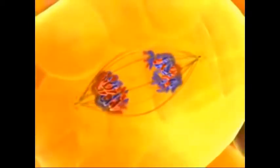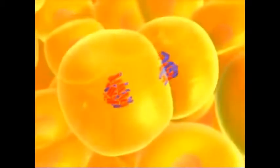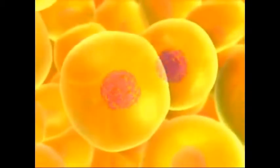This cell began meiosis with 46 chromosomes, but each daughter cell now has only 23 chromosomes.